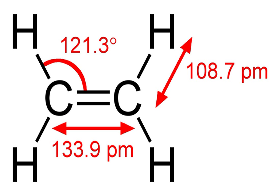Major industrial reactions of ethylene include, in order of scale: 1) polymerization, 2) oxidation, 3) halogenation and hydrohalogenation, 4) alkylation, 5) hydration, 6) oligomerization, and 7) hydroformylation. In the United States and Europe, approximately 90% of ethylene is used to produce ethylene oxide, ethylene dichloride, ethyl benzene, and polyethylene. Most of the reactions with ethylene are electrophilic addition.